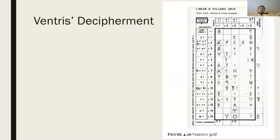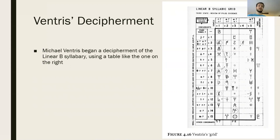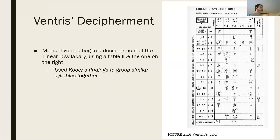We also discussed the contributions of archaeologist Michael Ventris. Ventris was famous for making a grid table where the various Linear B symbols could be arranged. Each row of the table would represent which consonant those symbols begin with, since these are symbols of a syllabary, and each column would represent which vowel is in each of those syllables. He used a lot of Kober's findings to group similar syllables together, looking at where inflectional endings of a word might change to determine which syllable symbols have the same initial sound.